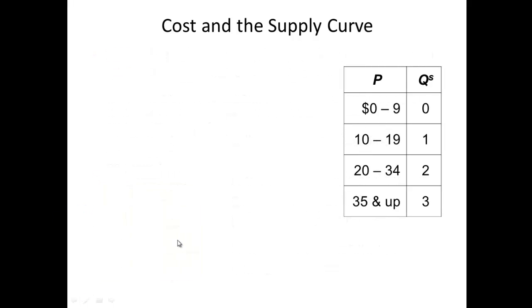Now when we take their cost, basically what we do is create a supply schedule. Remember the demand schedule is price and quantity demanded. Supply schedule is price and quantity supplied. So what we find here is that between $0 and $9, nobody is willing to supply any goods or services. When the price rises to $10 to $19, only one person. When it is $20 to $34, only two individuals. And when the price goes from $35 and up, all three are willing to produce and sell their goods and services.